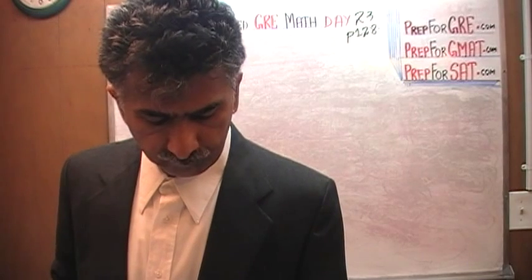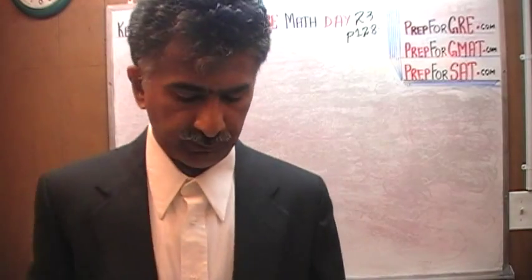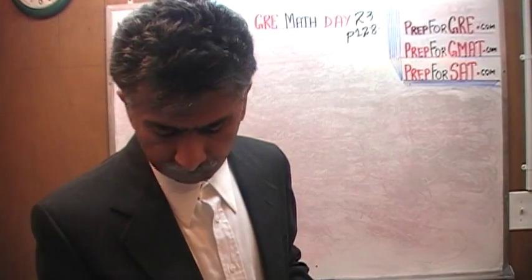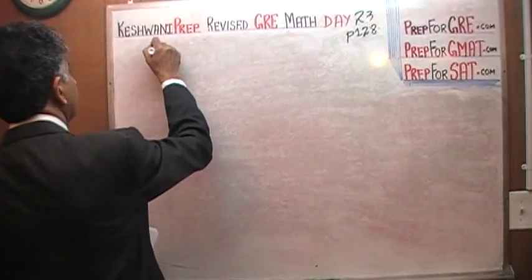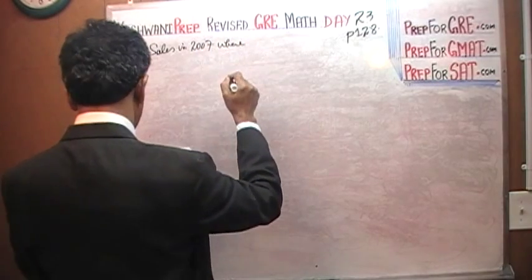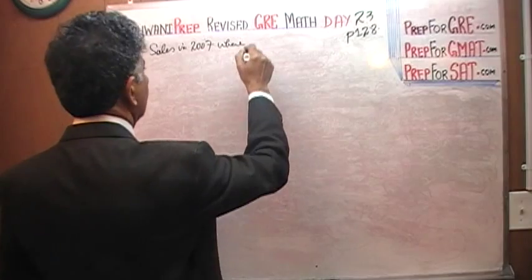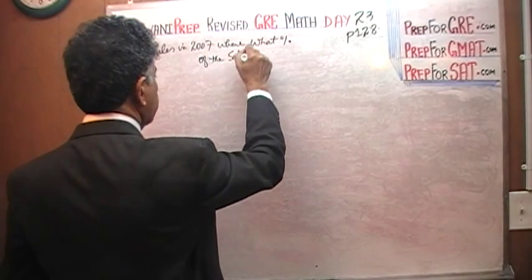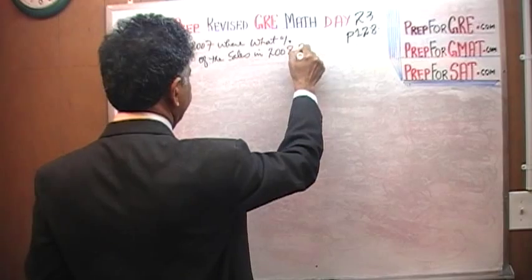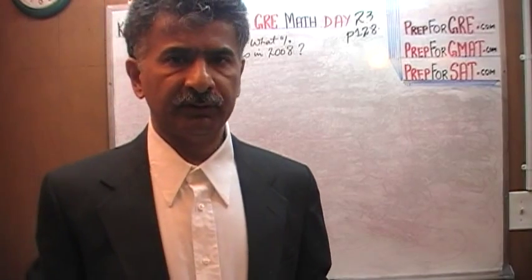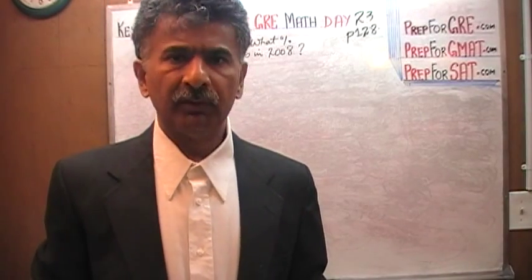It says: at store T, the sales in 2007 were what percentage of the sales in 2008? The table is given to us on the previous page, page 127. The very first thing you notice is that nobody is asking us for the absolute amount. We are looking for a relative change.